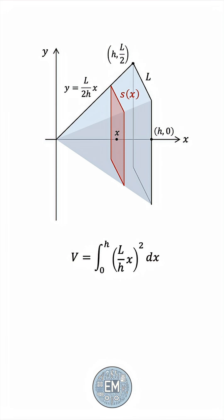We'll take the constant outside the integral, this is L squared over h squared, compute the antiderivative, and substitute the bound. We can cancel the h's, giving us one-third L squared times h.